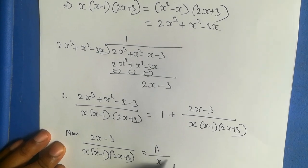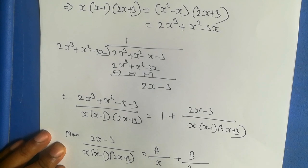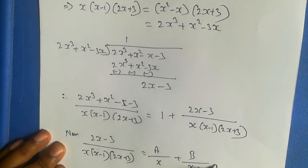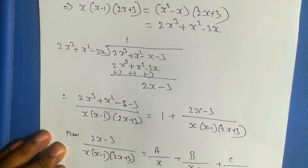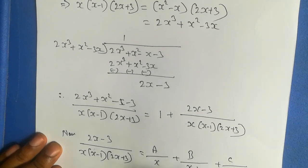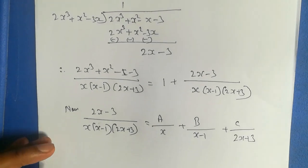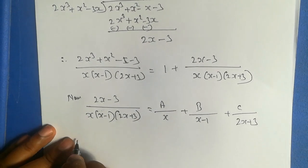We write A by x plus B by (x minus 1) plus C by (2x plus 3). We know to multiply this term.